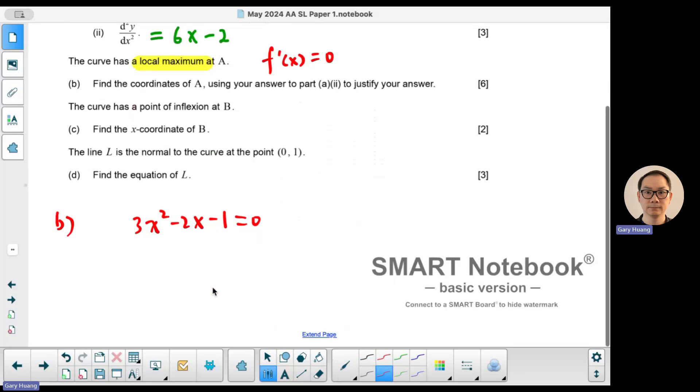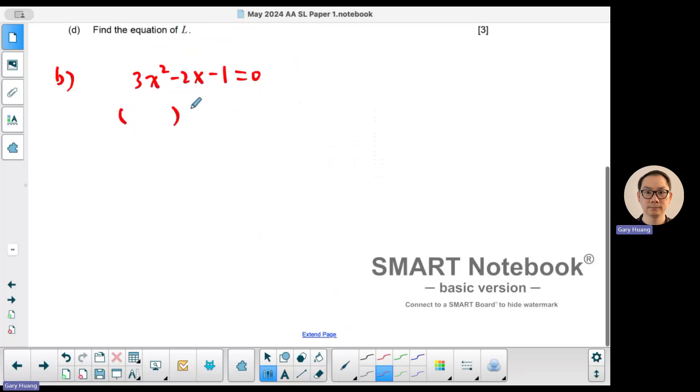This is a quadratic and it's factorable. So you're going to factor into two brackets. 3x², so that's going to be 3x and x. Negative 1, so it's going to be a 1 and negative 1. Now you need a sum of negative 2, so that's going to be -3x + 1x. So 3x² - 3x + 1x, that's -2x, and then 1 and 1 give you -1. Which means x is equal to -1/3, and x is equal to 1.